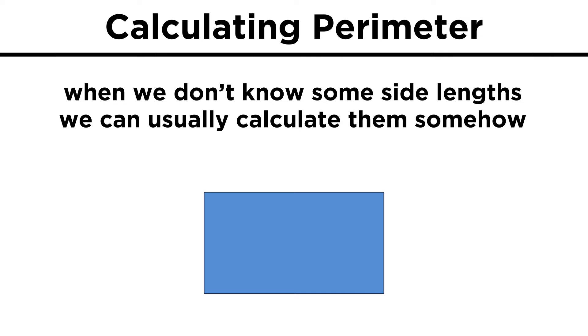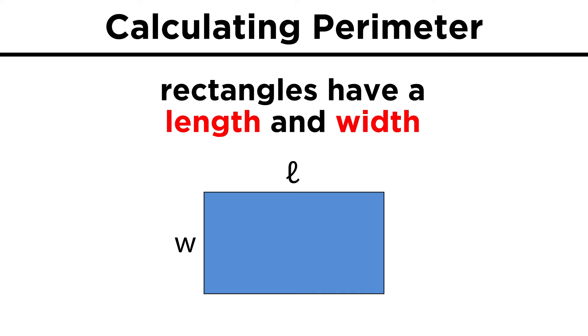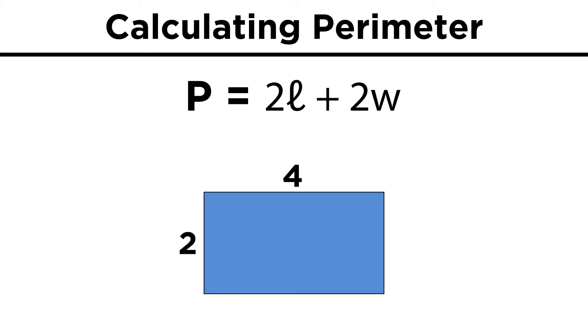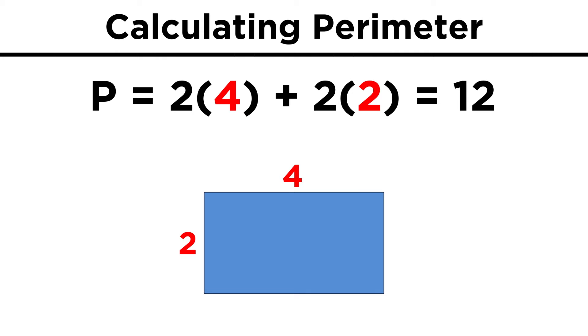If we don't know one or more of the sides, we can usually calculate them depending on what shape we are looking at. First, let's look at rectangles. These have both a length and a width. Since there are four sides total, two lengths and two widths, the perimeter of a rectangle is equal to L plus W plus L plus W, or two L plus two W. So if the dimensions of a rectangle are four by two, we can just plug these into the equation, and we see that we get twelve for the perimeter.